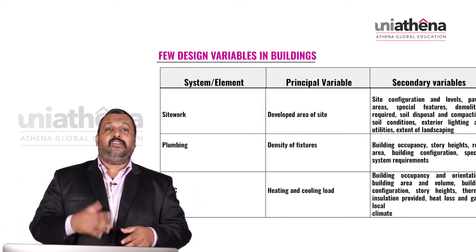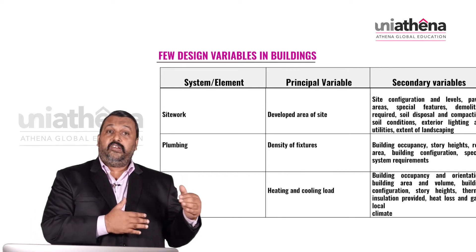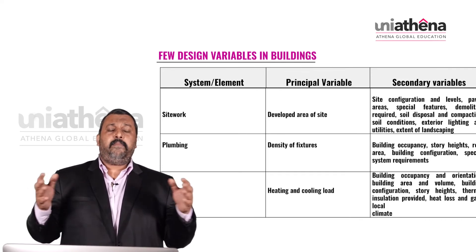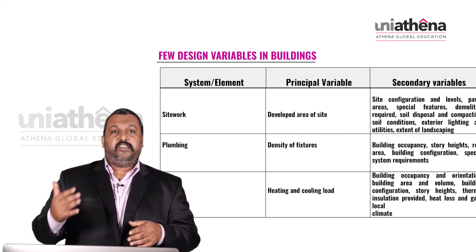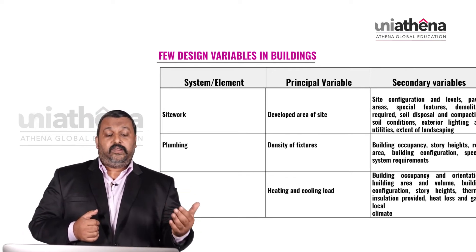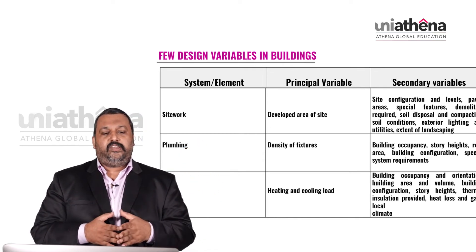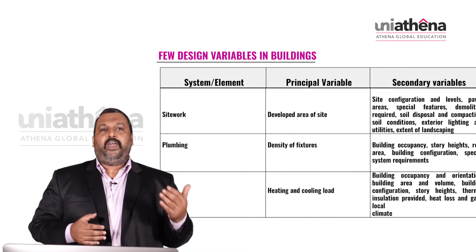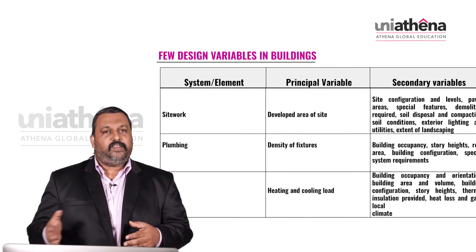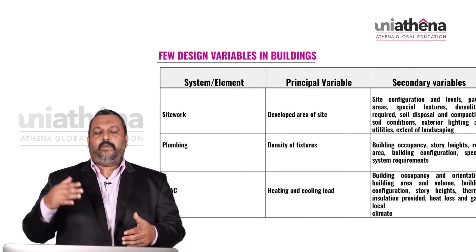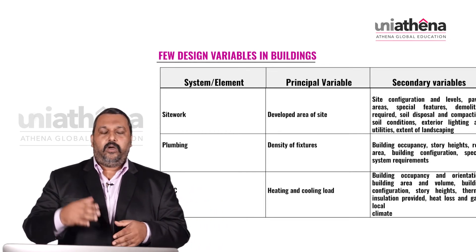For plumbing as a system or element, the principal variable is the density of fixtures — the number of fixtures which has to be used. Secondary variables are building occupancy, capacity, story heights, roof area, building configurations, and special system requirements.